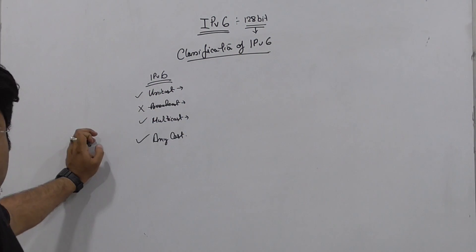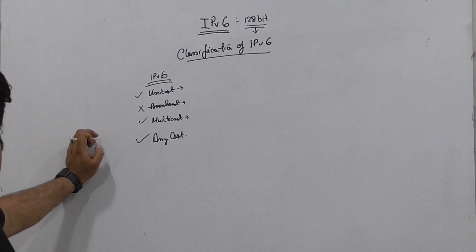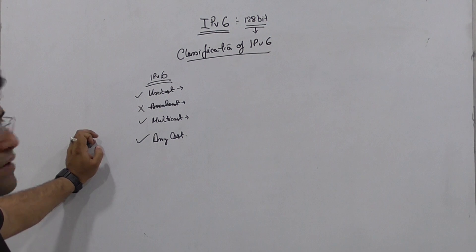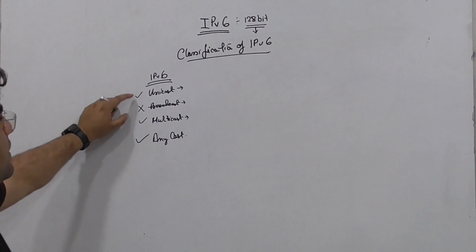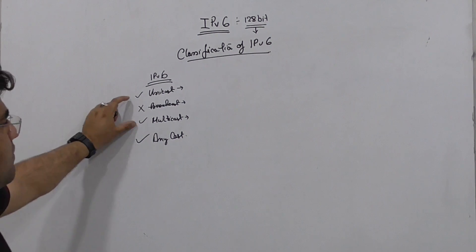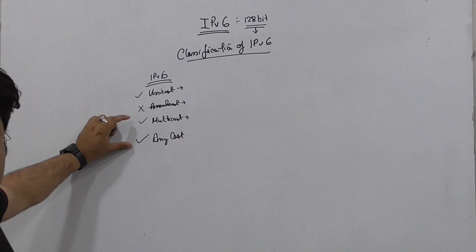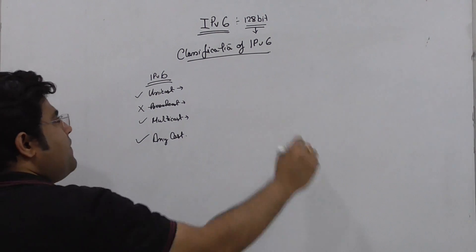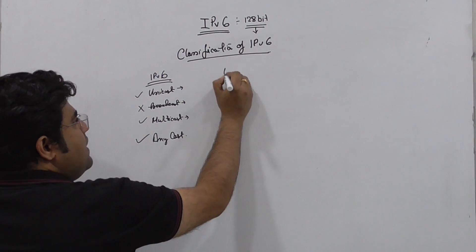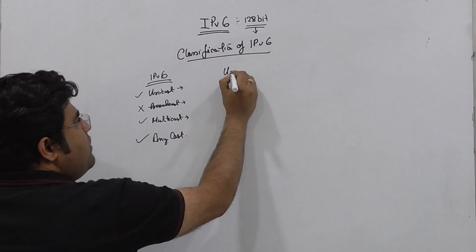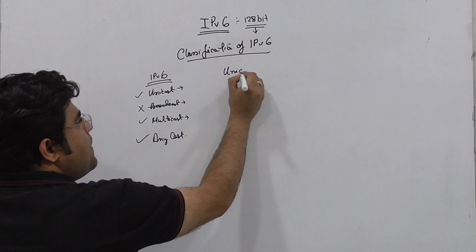In IPv6, unicast, multicast, and anycast — these are the three variations. First, let us understand unicast.